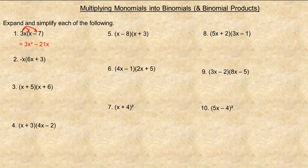In number two, the negative x gets distributed into the brackets. We multiply negative x by 6x, which gives negative 6x squared, and negative x times three is minus 3x. Remember, this is x squared because we add the exponents — there's a one on each x, so they add to give x squared.